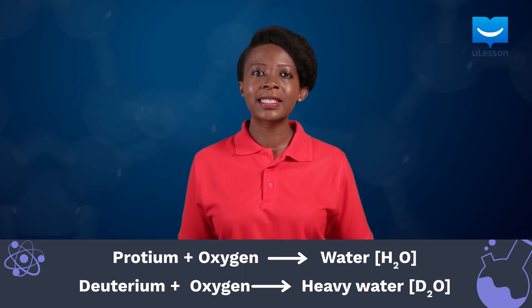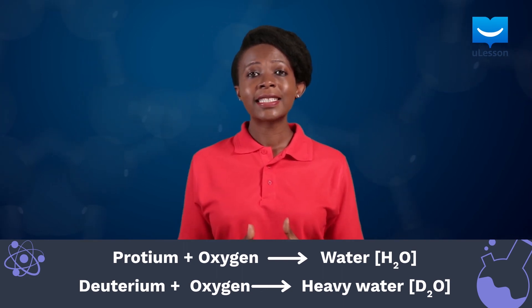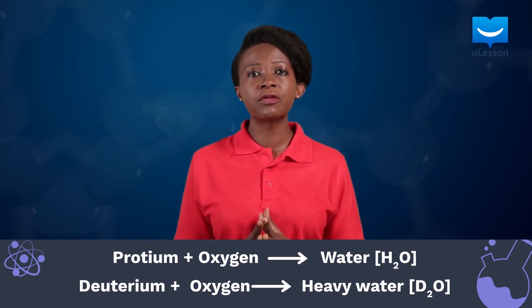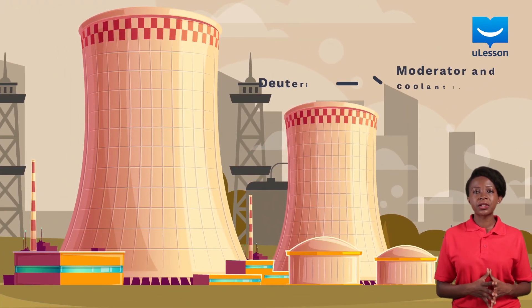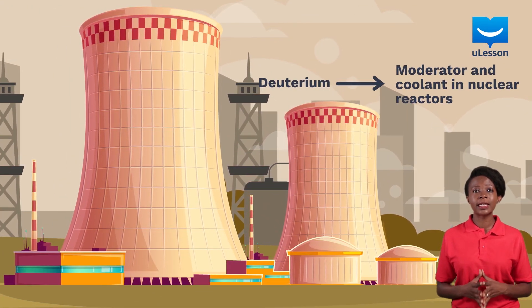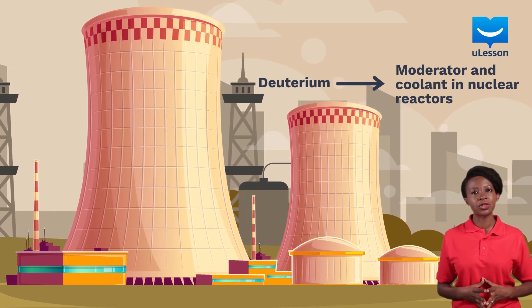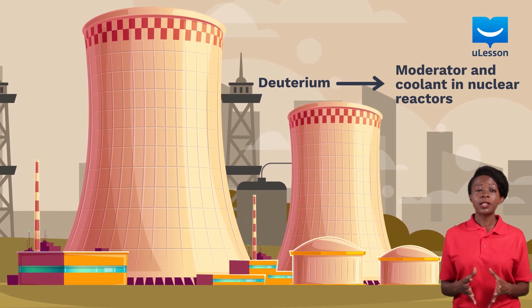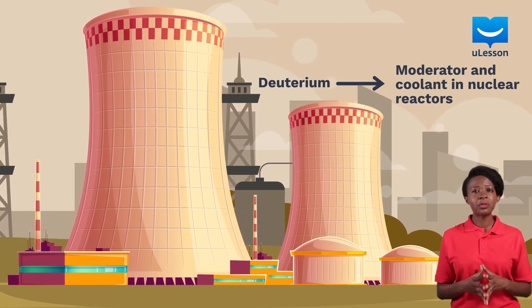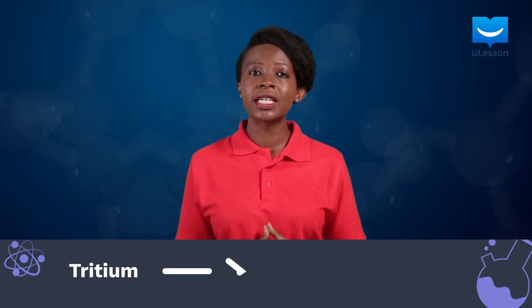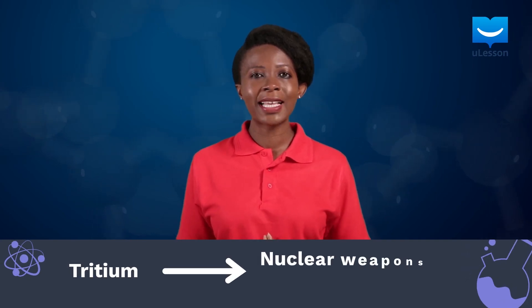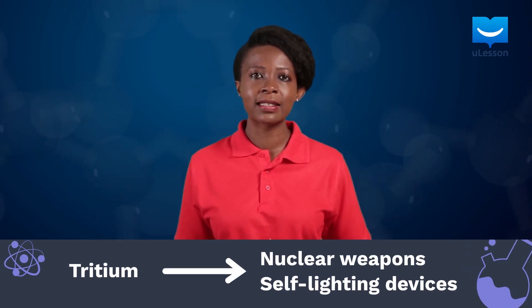Let us take a brief look at the uses of deuterium and tritium. Deuterium is used as a moderator and coolant in nuclear reactors during the generation of electricity. Due to tritium's radioactive nature, it is used for producing nuclear weapons and in self-lighting devices.